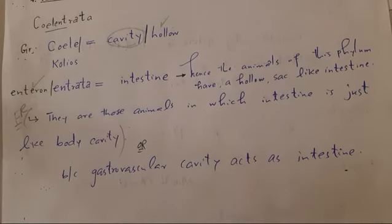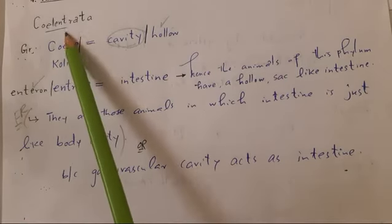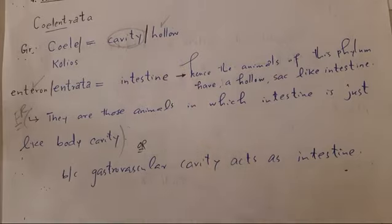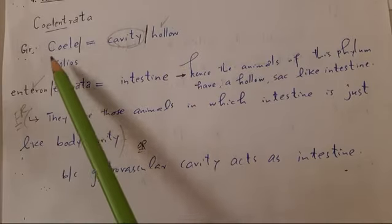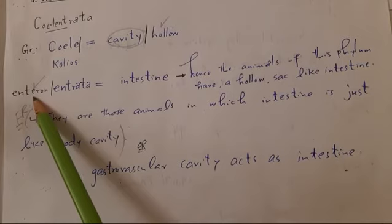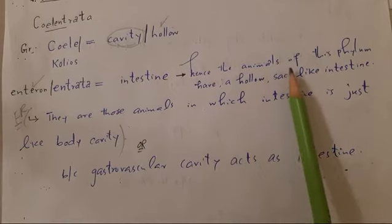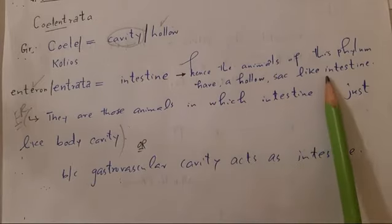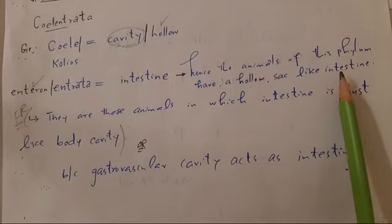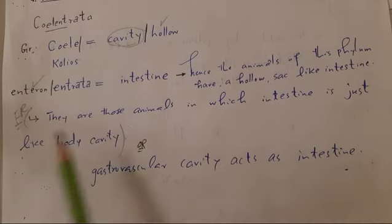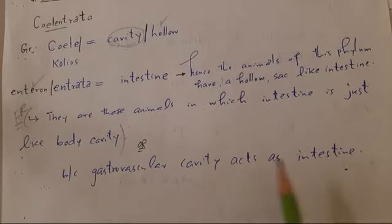Now, what is the meaning of Coelentrata? Coelentrata is also a combination of two Greek words: 'coelus' means hollow while 'enteron' or 'intera' means intestine. Hence the animals of this phylum have a hollow sac-like intestine or gastro-vascular cavity — their intestine is just like a body cavity.